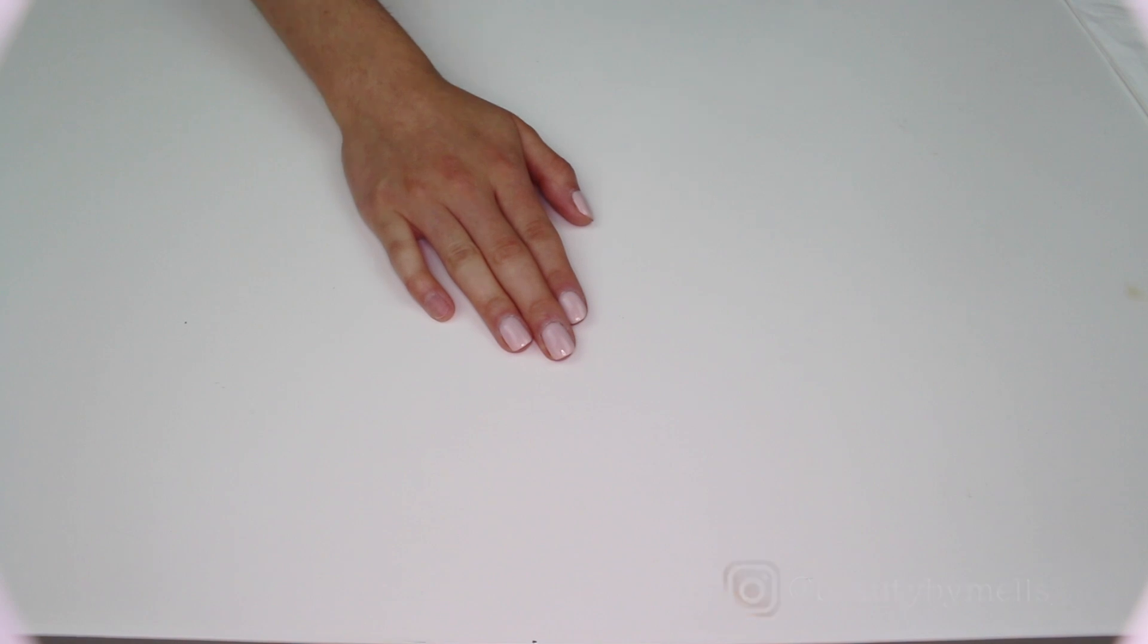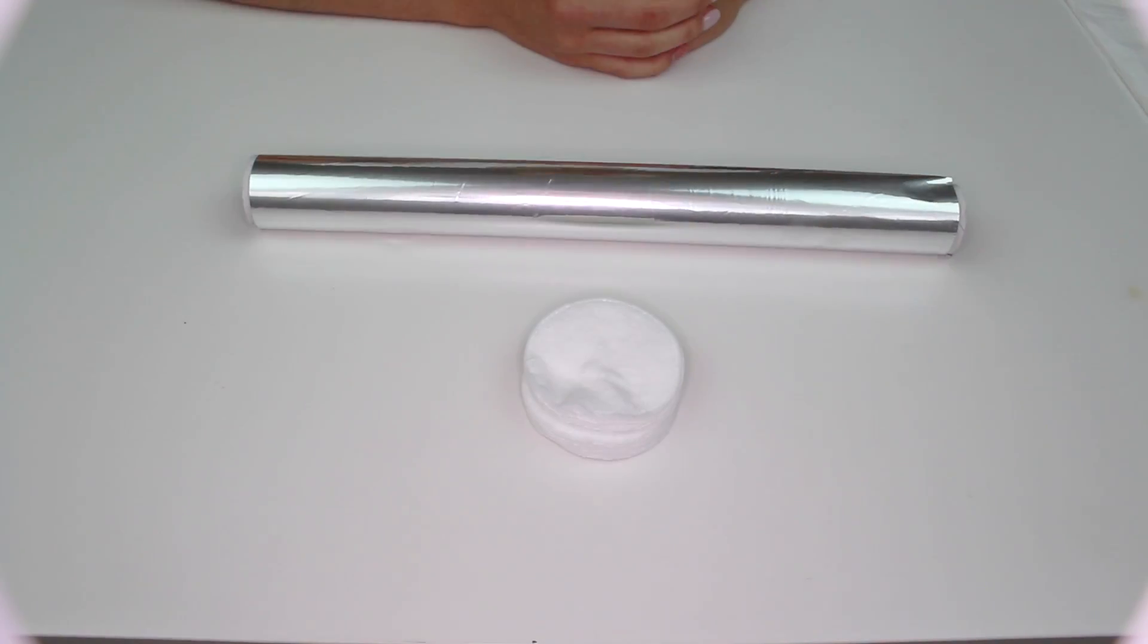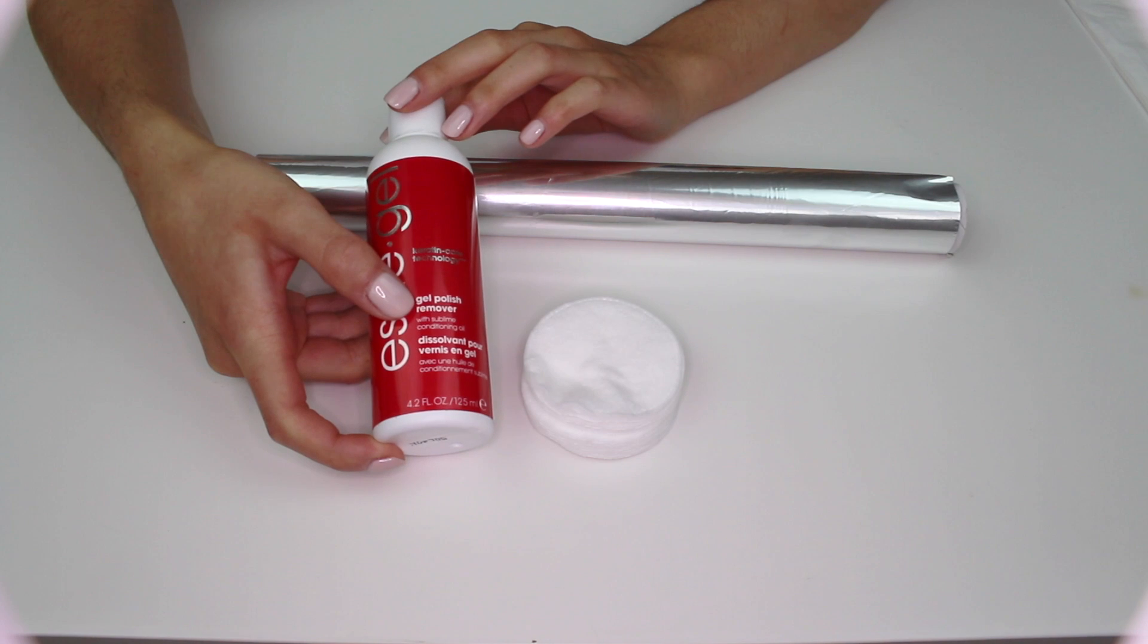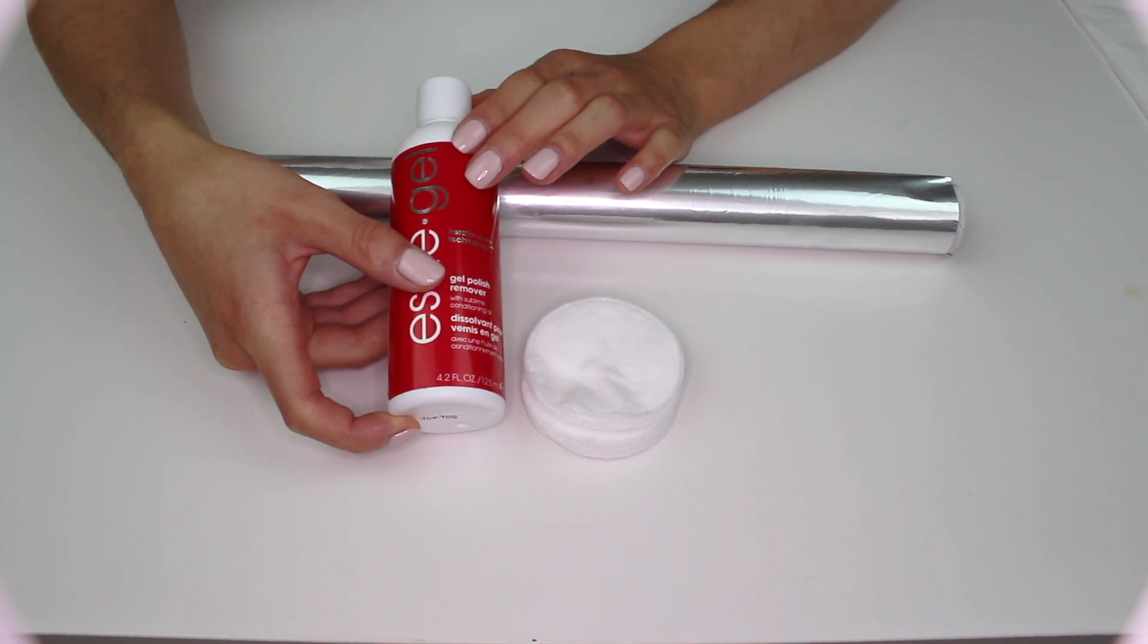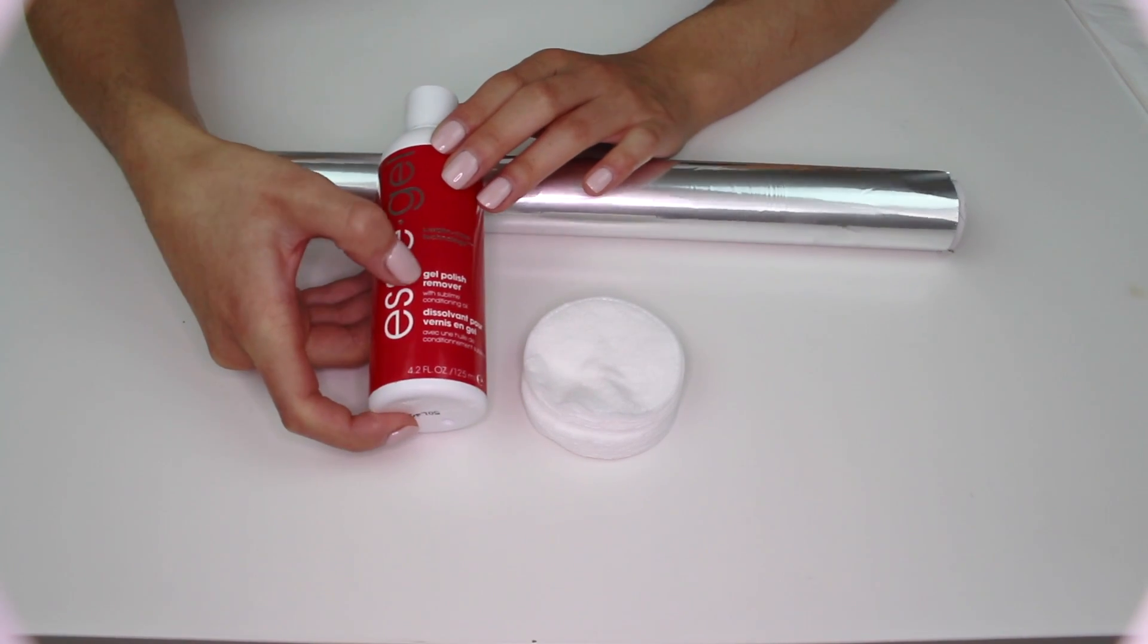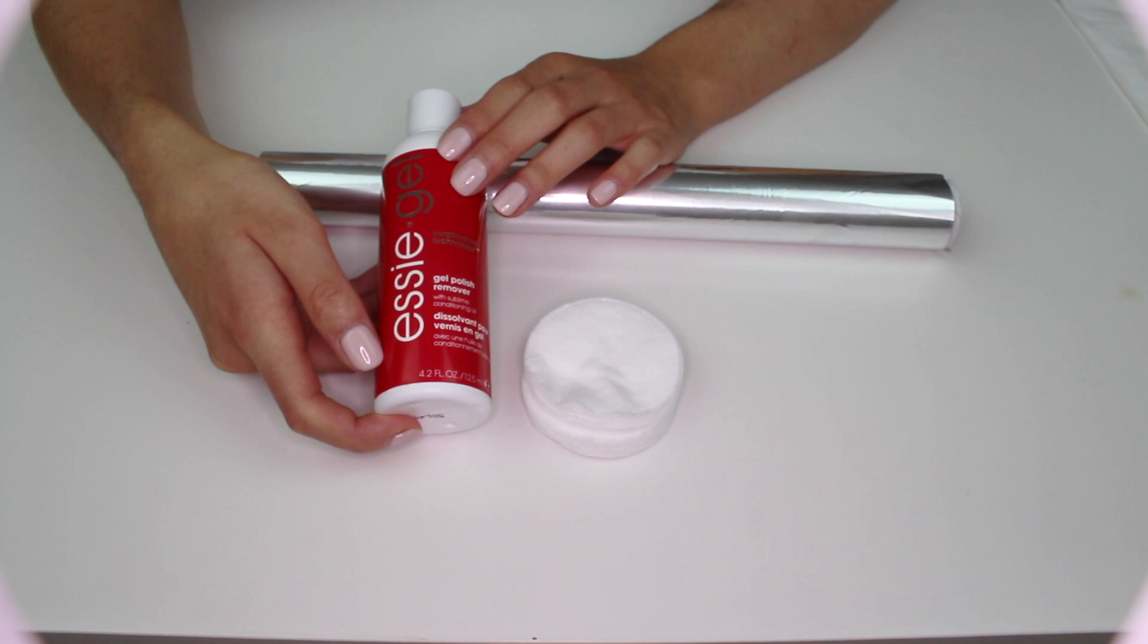The things that you need are foil and cotton wool, a gel polish remover you can purchase from Amazon or eBay. As long as you write gel polish remover there's loads of different brands out there.